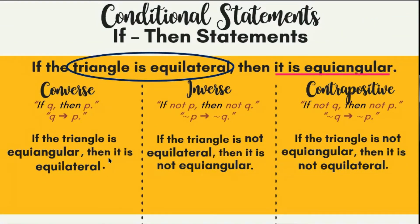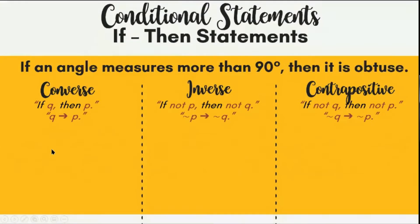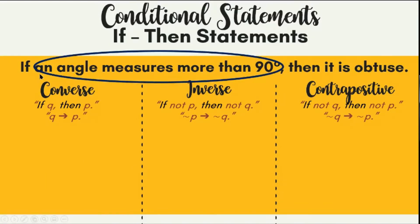To recap: converse — hypothesis and conclusion are swapped. Inverse — no swapping but 'not' is added. Contrapositive — take the converse and add 'not'. Example two: 'If an angle measures more than 90 degrees, then it is obtuse.' The hypothesis is 'an angle measures more than 90 degrees' and the conclusion is 'it is obtuse.' What will be the converse, inverse, and contrapositive of this conditional statement?